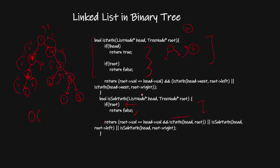The time complexity is O(n × max(height of binary tree, length of linked list)), because for each node we may traverse a path of length proportional to whichever is larger. The space complexity is O(height) due to the recursion stack. I hope you understand the solution and the intuition. If it helps you, please hit like and subscribe. Thanks for watching.